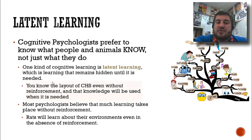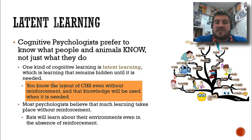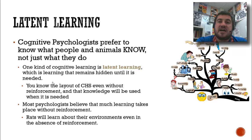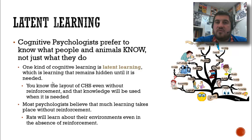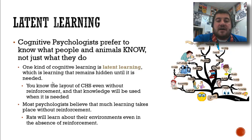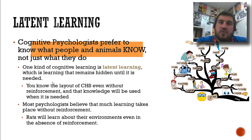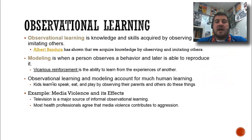For example, latent learning: you know the layout of CHS as a junior or senior even without reinforcement, and you use that knowledge when it is needed. If I ask someone to go to the science room, they can make their way there. Reinforcement wasn't needed for that. Most psychologists think that most learning takes place without reinforcement — like rats, even if there's no cheese at the end of the maze, they'll still walk around, smell, and learn about their environments out of curiosity.